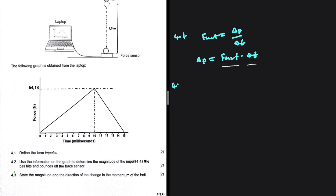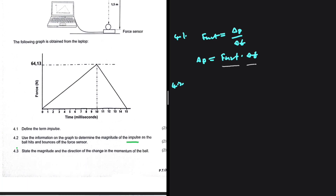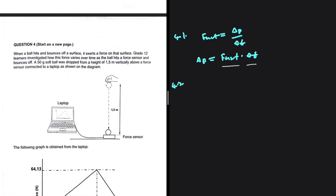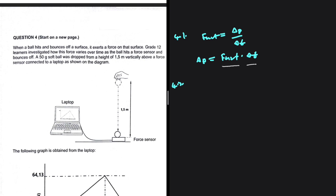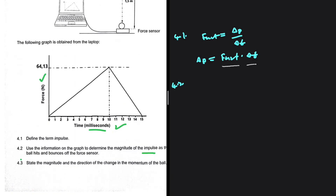Let's go ahead and take a look at 4.2: use the information on the graph to determine the magnitude of the impulse as the ball hits and bounces off the force sensor. When a ball hits and bounces off a surface, it exerts a force on that surface. A 50 gram softball was dropped from a height of 1.5 meters vertically above a force sensor connected to a laptop. We're given a force versus time graph - force in Newtons and time in milliseconds. As soon as you don't realize that the time is in milliseconds, you're probably going to get the question wrong.